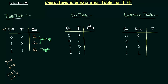In the characteristic table there is a single output — the next state, Qn plus 1. It depends upon the present state as well as the input. Whatever will be the value of the next state depends upon the input you are giving and what state it is in. So Qn and T are the two inputs, giving four possible combinations. Let's see for the first combination what the value of Qn plus 1 will be.